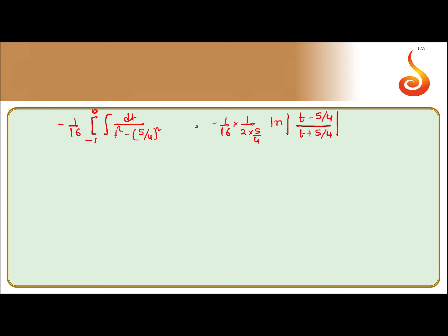Upper limit is 0, lower limit is -1. So 2 and 2 will cancel, we get -1/40 log. If I put 0, this becomes log 1 minus log of, if we put -1, we get |(-9/4)/(1/4)|.